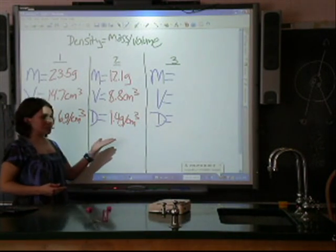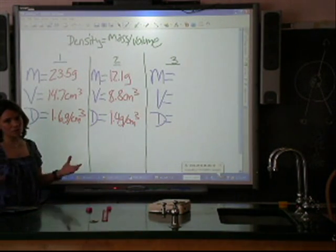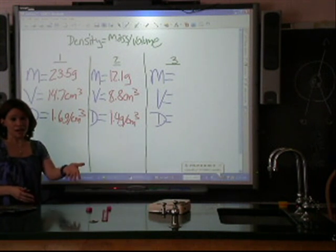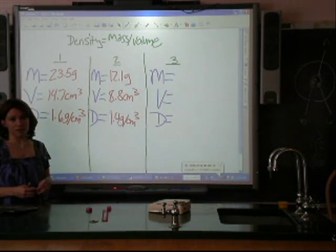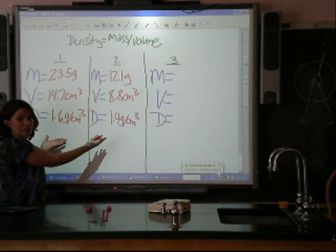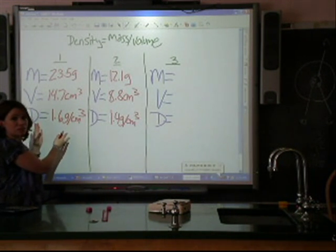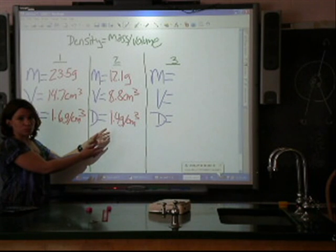The reason why there's a difference in the density is because sometimes we make errors when we're doing calculations. I might have read the ruler wrong. The scale might be slightly off, but it's pretty close together. The full object has a density of 1.6, while half is 1.4.